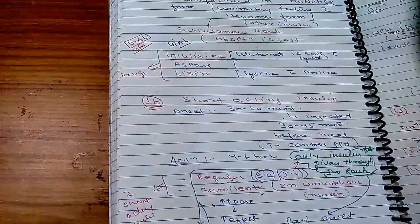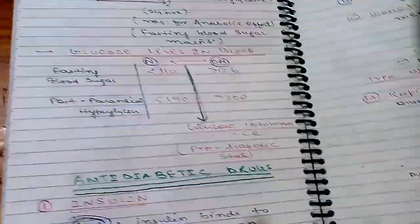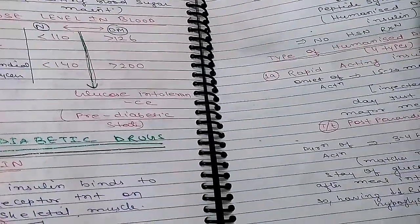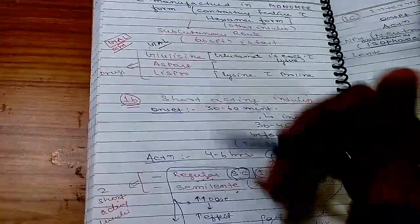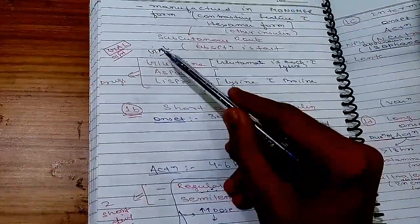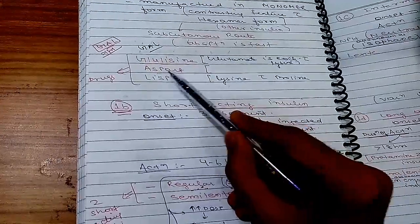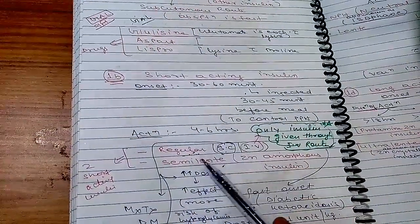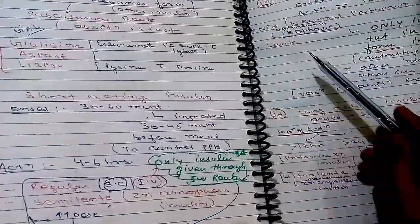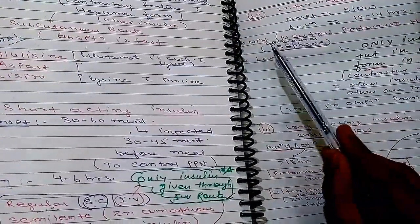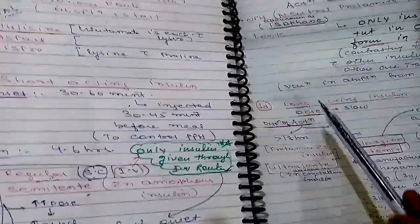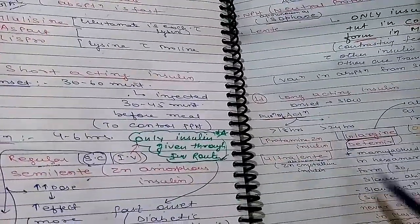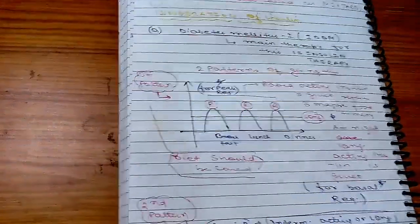To recap the classification of insulin: rapidly acting — glulisine, aspart, lispro; short acting — regular insulin and semilente; intermediate acting — NPH (isophane) and lente; long acting — protamine zinc insulin, ultralente, glargine, and detemir.